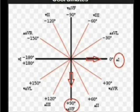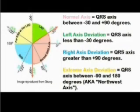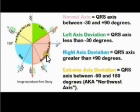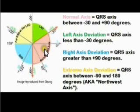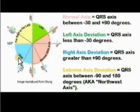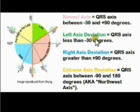Now let us talk about the normal axis. As shown by the pink color, from minus 30 to plus 90 degrees is considered the normal axis. If the calculated vector falls between minus 30 and plus 90 degrees, the axis is normal. If more than 90 degrees, we call it right axis deviation, represented by blue. Similarly, left axis deviation occurs from minus 30 to minus 90 degrees.